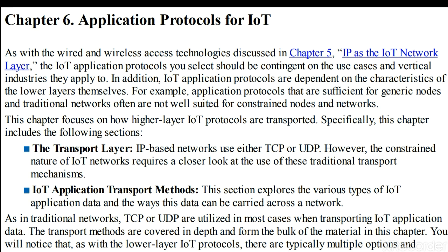IoT application protocols are dependent on the characteristics of the lower layers. For example, application protocols that are applicable to generic nodes and traditional networks will not be well suited for constrained networks or constrained nodes. So traditional network protocols will not be applicable for constrained nodes and networks.